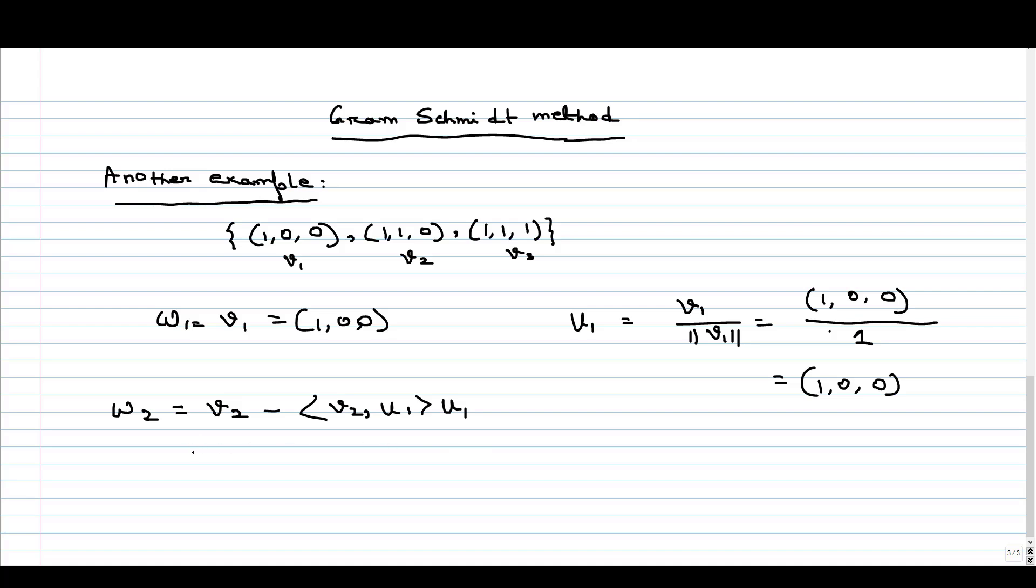This will give us a new vector which is orthogonal to U1, and then we have to normalize it. Basically, then we have to divide it with the norm. So first do this step. V2 is (1, 1, 0), and if I take this inner product, it is (1, 1, 0) and our U1 is (1, 0, 0).